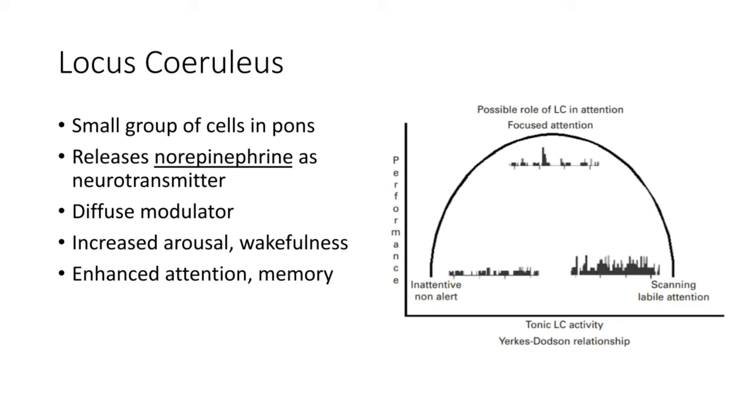They're involved in increasing arousal and wakefulness, also enhancing attention and memory. There's an interesting relationship between arousal and attention and the activity of these neurons in the locus coeruleus, or LC as you can see abbreviated there in that figure. You can see those jaggedy spike things represent action potentials. And you can see with a little bit of spiking, then you're inattentive, non-alert.